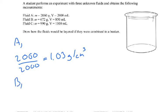OK, let's have a look at B. So this time I've got a mass of 672 grams divided by a volume of 850. So 672 divided by 850, I get 0.79 grams per centimetre cubed.